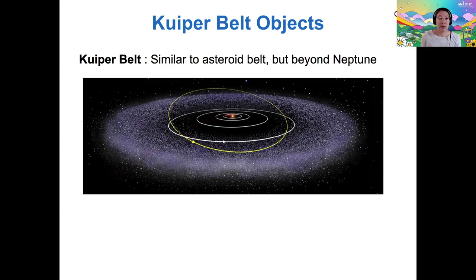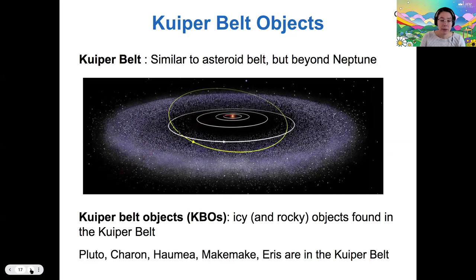And there's also a similar belt that you might not have heard of before called the Kuiper belt. And this is very similar to the asteroid belt, but it's out beyond the reaches of Neptune. And while it is similar in its structure to the asteroid belt, it's a collection of loose, random objects. The objects that live out there are a little bit different than the asteroids. So Kuiper belt objects, we call these KBOs for short, they tend to be icy and rocky. So they're a mixture of ice and rock. And a lot of these dwarf planets, such as Pluto, Charon, Haumea, Makemake and Eris, those are all out there in the Kuiper belt. So most of our dwarf planets are out in the Kuiper belt.